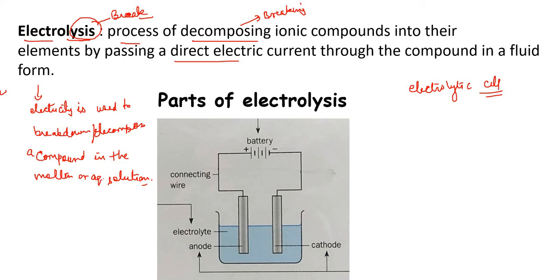In electrolysis, there are three main parts. The first is a battery. The second is electrodes — there are two electrodes: the cathode and the anode. The third component is the electrolyte. We will discuss what each of these means in a moment.